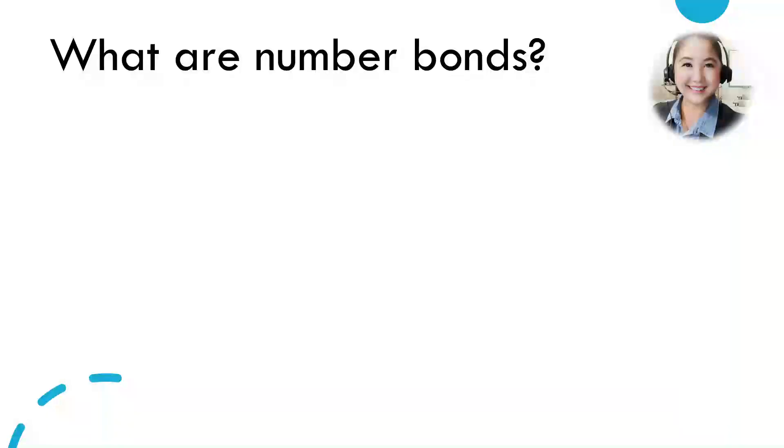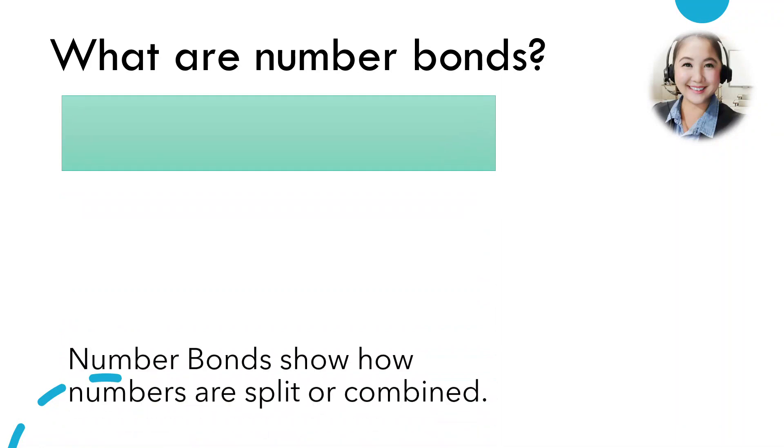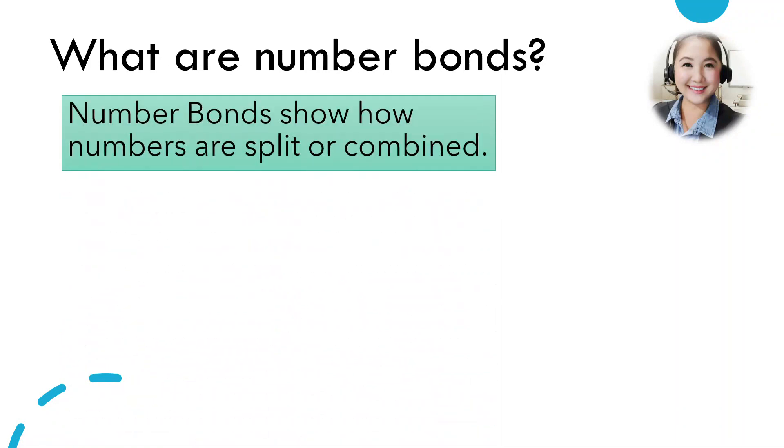Another definition of number bonds is that it show how numbers are split or combined just like this. This is a number bond of five. As you can see, the total is five and then we have two stars and three stars.